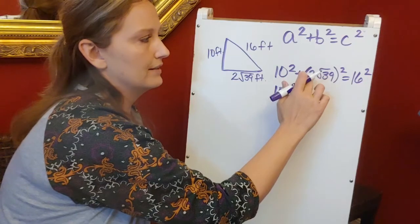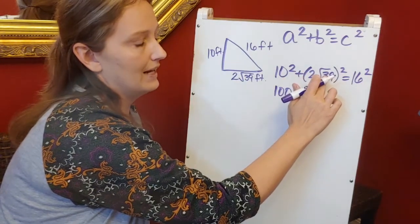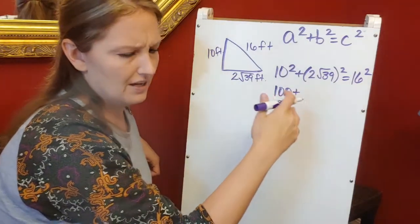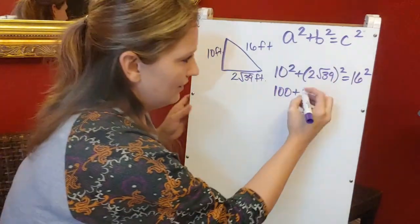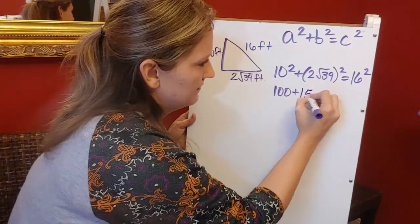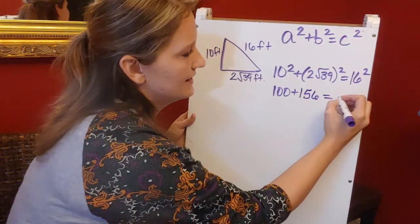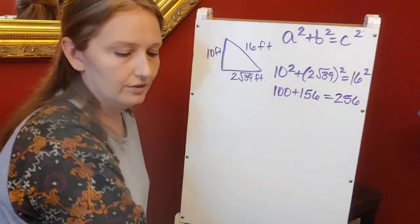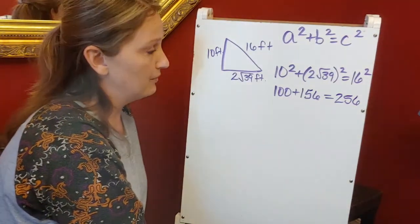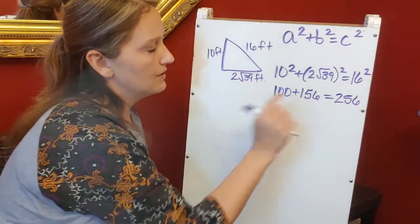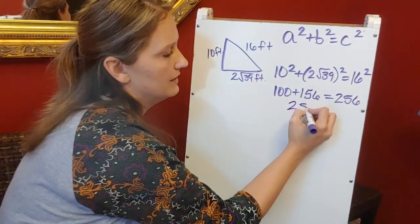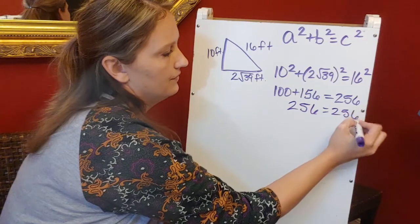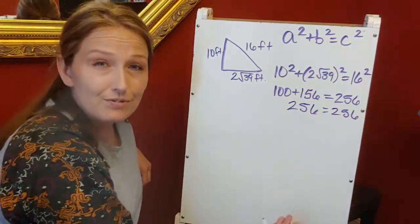these numbers: 2² is 4, and if I square the square root of 39, that's just 39. Either way you get 156, and 16² is 256. 100 + 156 gives me 256, which equals 256. If your numbers come out